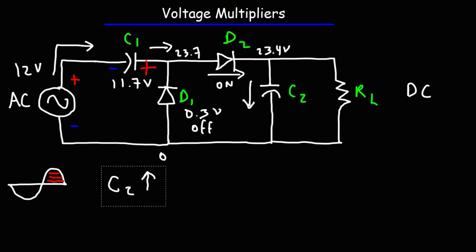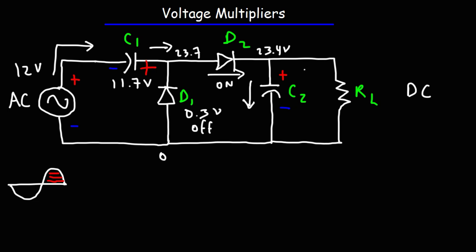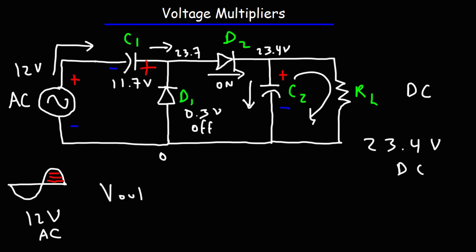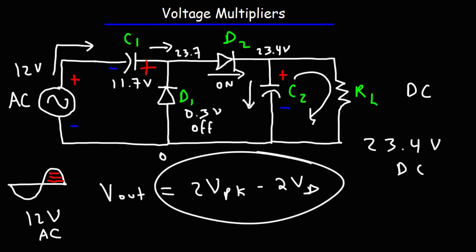Now that C2 has been charged to 23.4 volts, that energy is stored in the capacitor. D2 will prevent C2 from discharging back into the circuit because it will be in reverse bias mode, so C2 can only discharge through the load resistor. So for this particular example, we had an input of 12 volts AC and we now have an output voltage of 23.4 volts DC. The output voltage equals twice the peak voltage minus two times the diode voltage drop. That's how the half-wave voltage doubler circuit works.